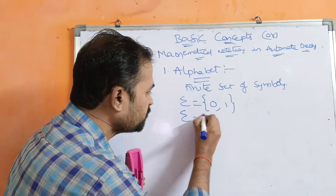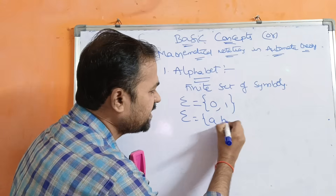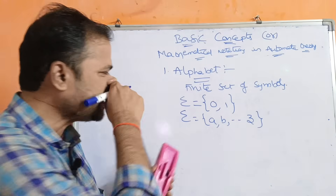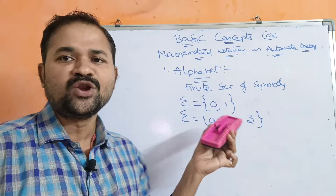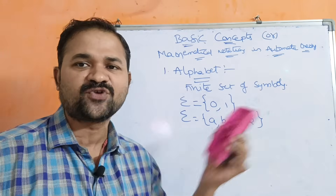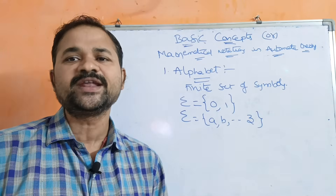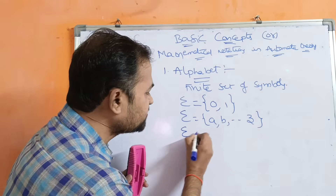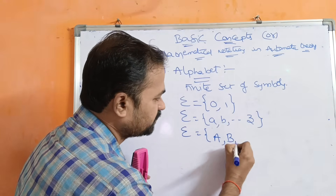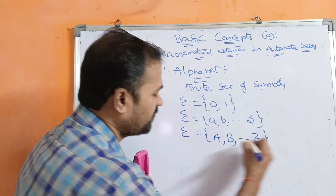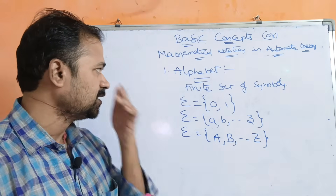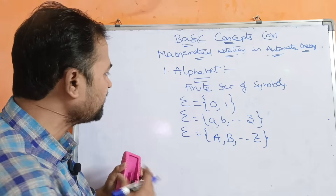Another example: sigma = {a, b, ..., z} — this is a lowercase alphabet because it contains only lowercase symbols. Similarly, we can write an alphabet for uppercase symbols, which would be called an uppercase alphabet.